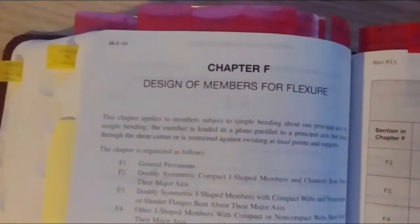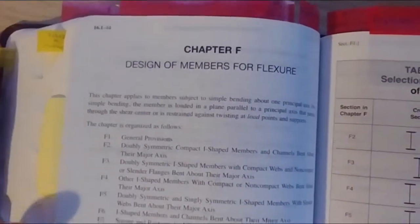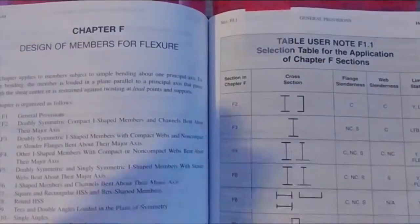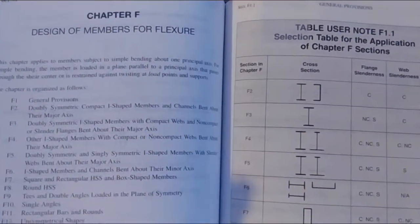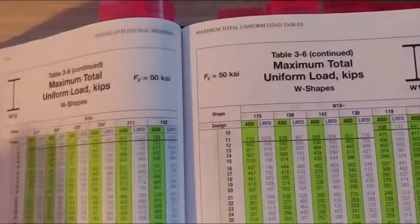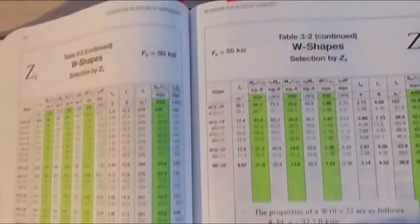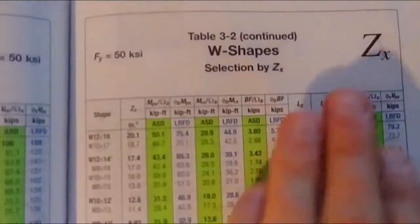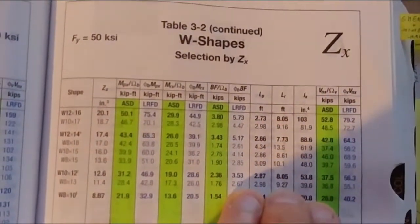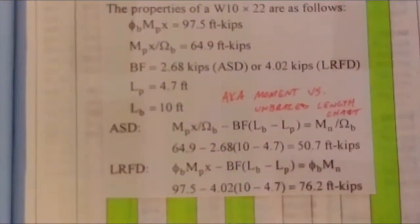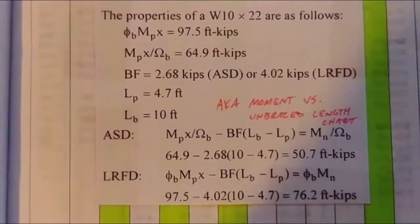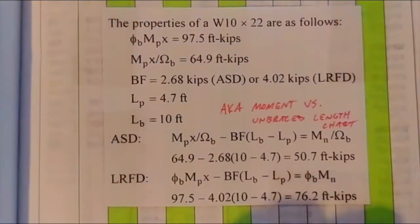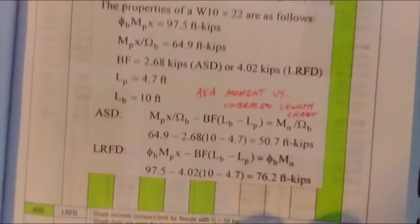So if you had, you know, a beam where there's, it was braced every two feet, but then there was a section of it that was braced four feet. You have to use that unbraced distance of four feet. So that's LB. And then LP and LR are your limiting lengths. So that's what those are. And those are derived in the back. You can derive them by hand in the back section. That is under the flexural tab. And that is, as I flip here, in chapter F, design of members for flexure.